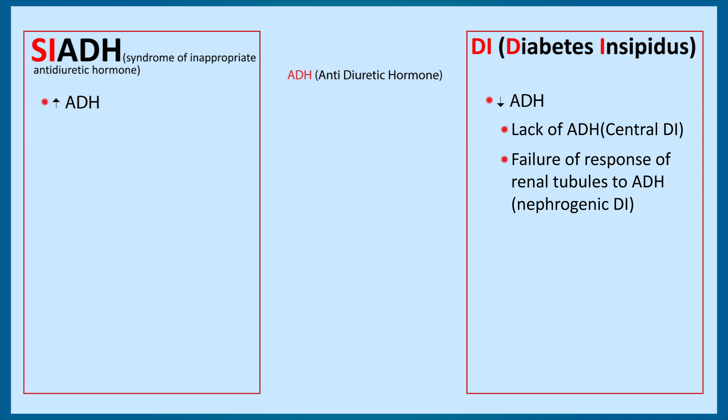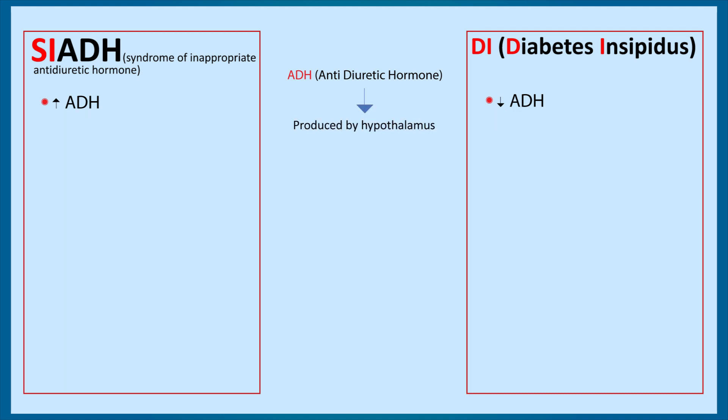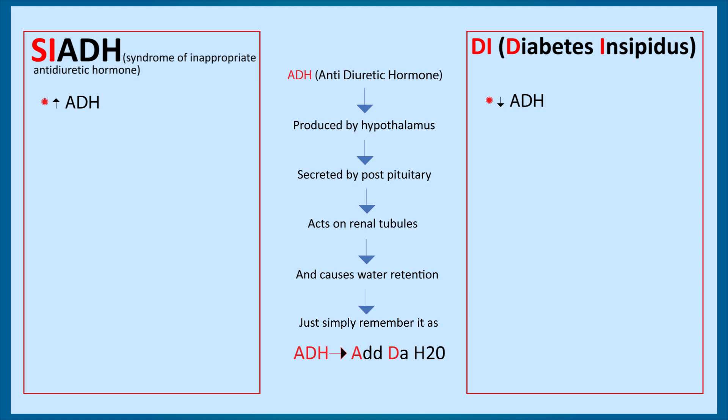Before going into detailed discussion of SIADH and diabetes insipidus, you need to know the concept of ADH release and its action — then all the causes, features, and treatment of both will make complete sense. ADH, the anti-diuretic hormone, is produced by the hypothalamus and secreted by the posterior pituitary. It then goes to the renal tubules, exerts its action there, and causes water retention. Just simply remember it as: ADH aids the water.